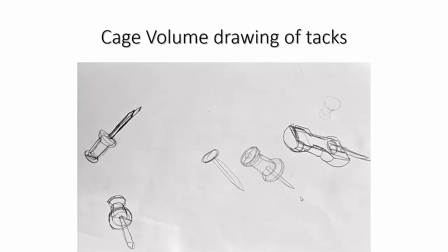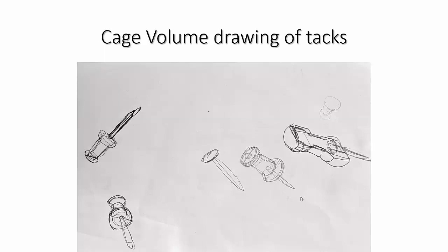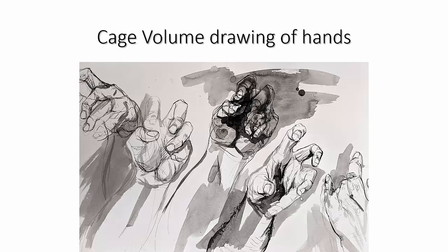Here's cage volume of the tacks. So you take that knowledge of the tacks that you did before and basically you can pass that along to other things, like hands, for example. Here's some cage volume drawing of hands with ink wash. But here's the tools. These are the tools you're actually going to be drawing.